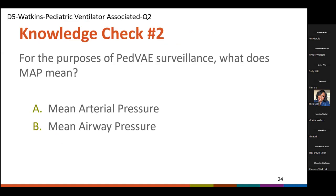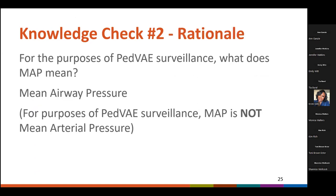Here we have knowledge check number two. For the purposes of PVAE surveillance, what does MAP mean? A, mean arterial pressure, or B, mean airway pressure? The majority of you selected the correct answer, which is B, mean airway pressure. For the purposes of PVAE surveillance, MAP stands for mean airway pressure.